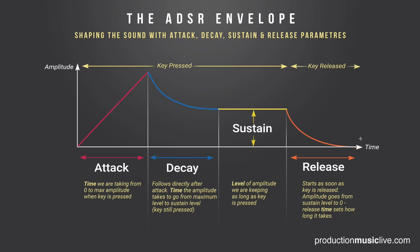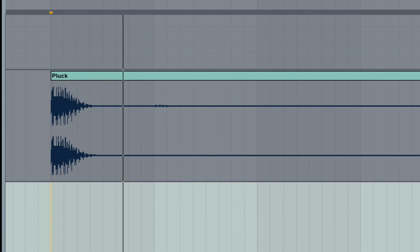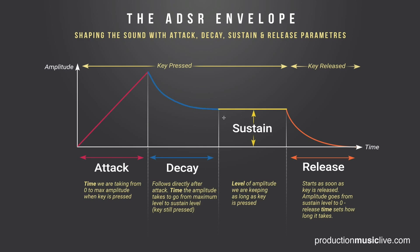If you want short and plucky sounds, take attack time to zero so you start right away with your maximum amplitude — like a kick sound, for example. Maximum amplitude right at the start, then a short decay time, meaning you just go tuk, tuk, and then the sound stops. Plucky sounds mostly don't have a high sustain level and are very short or even zero in the release time. Pad sounds, on the other hand, have a higher sustain level, a bit of attack, and release because they are more smooth.